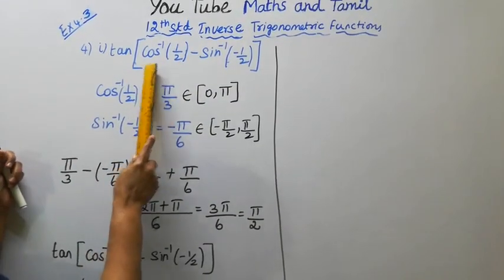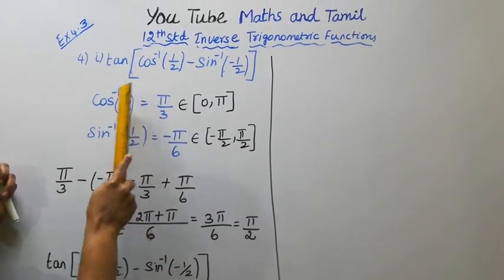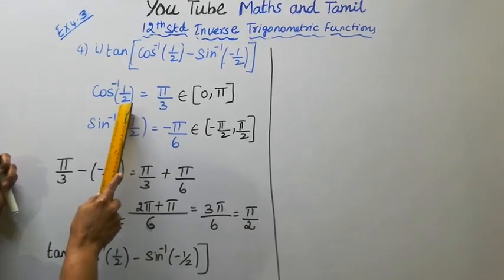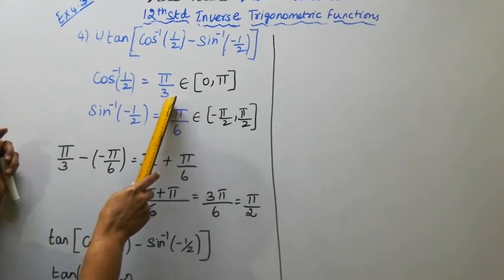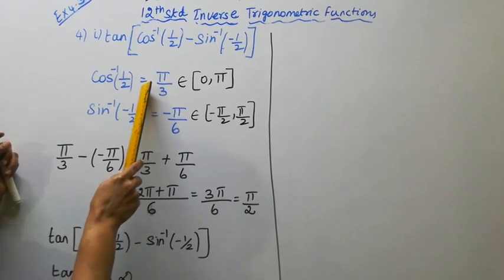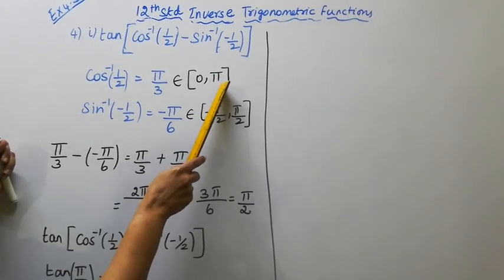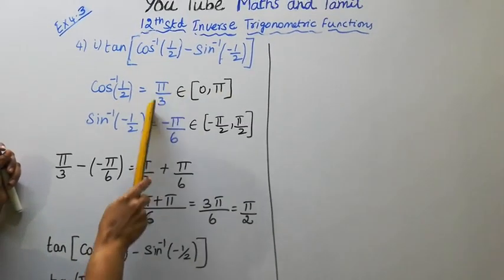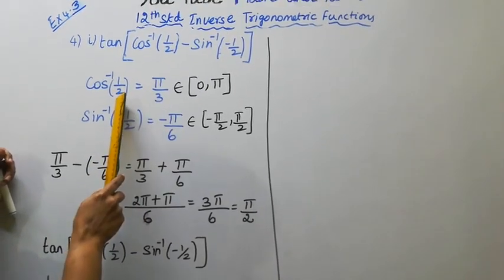First, find the value of cos inverse of half. From the trigonometric table, cos 60° equals half, so cos inverse of half equals π/3. And π/3 belongs to the closed interval 0 to π, so the condition is satisfied. Therefore cos inverse of half is π/3.